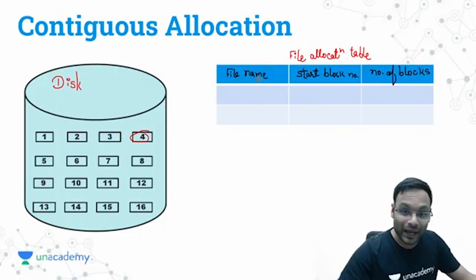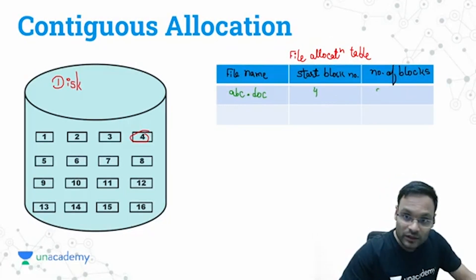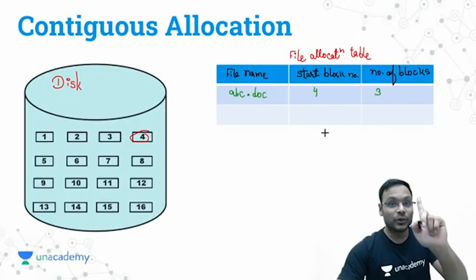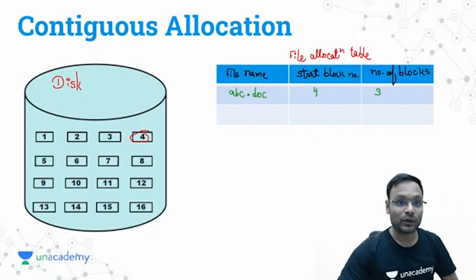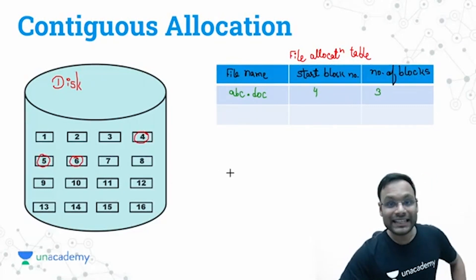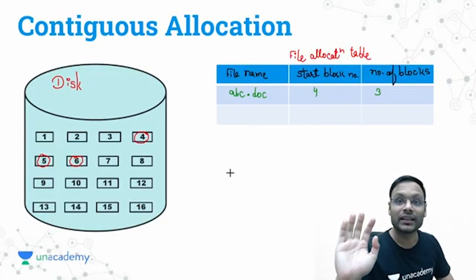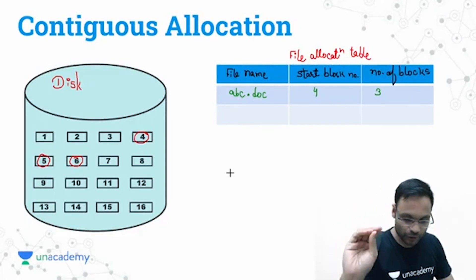Let's say I have a file abc.doc, a document type file. Its starting block is four, block number four, and total number of blocks needed to store is three. Can you tell me what are the blocks which will be used to store that particular file? Block number four, block number five, and block number six—these three consecutive contiguous blocks will be needed to store this file.